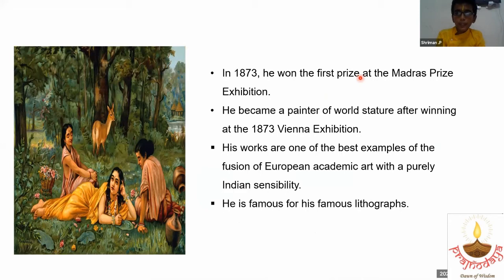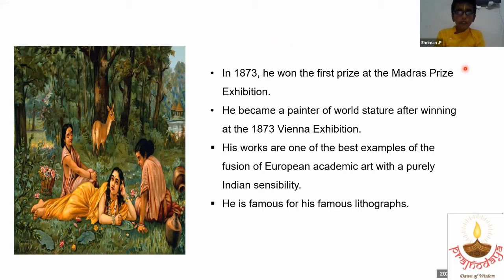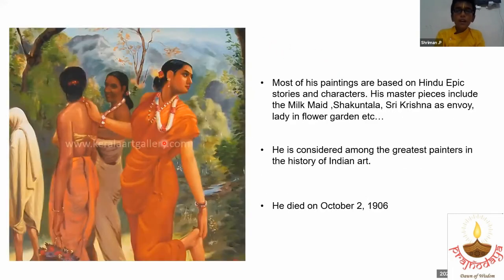He became a painter of world stature after winning at the 1873 Vienna exhibition. His works are one of the best examples of the fusion of European academic art with a purely Indian sensibility. He is famous for his lithographs, and this is one of his lithographs.